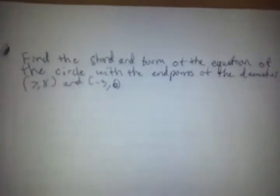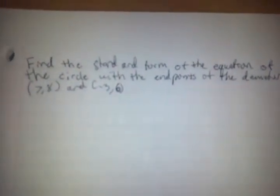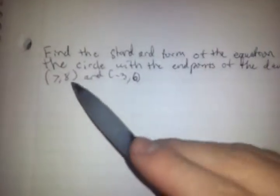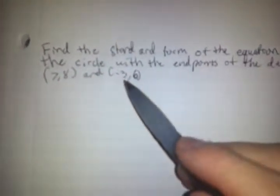Hello, I'm Ryan, and I'm going to be showing you how to find the standard form of a circle. Here it says, find the standard form of the equation of the circle with the endpoints of the diameter (7,8) being our point 1, and (-3,6) being our point 2.